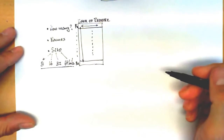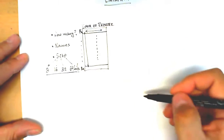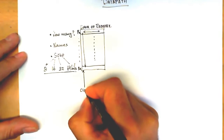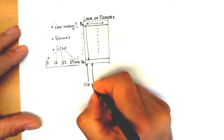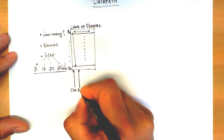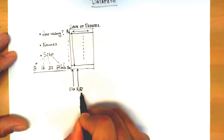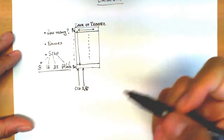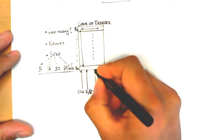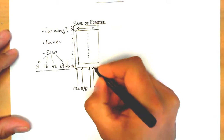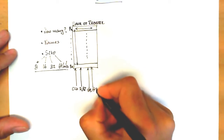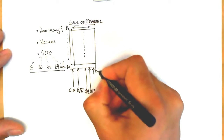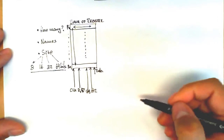This bank of registers has a few signals that are very important and control how operations are carried out. One of the most important ones, because these are memory elements, is the clock. Another very important control signal is the one stating whether the operation is reading a value or writing a value, typically represented as read/W-bar. Depending on the bank of registers, if it can read two registers at the same time, we put address 1 and address 2 as the addresses of the registers to be read. Another control entry is the data that is written to the bank of registers.